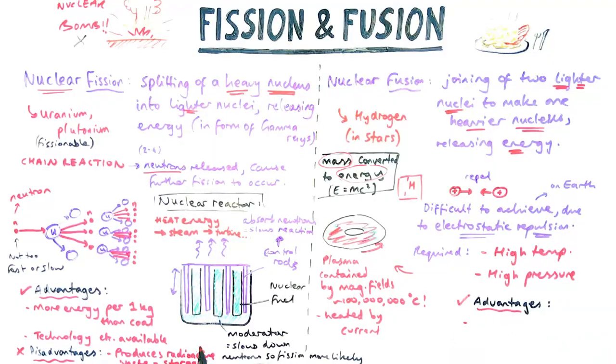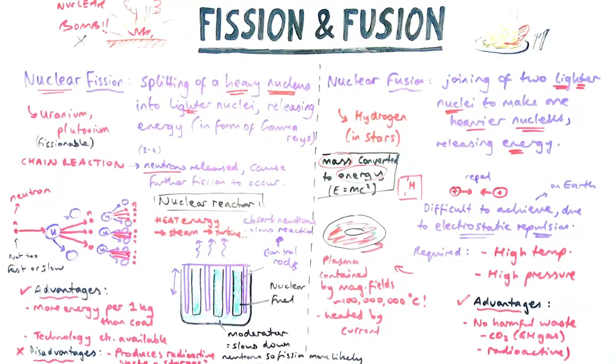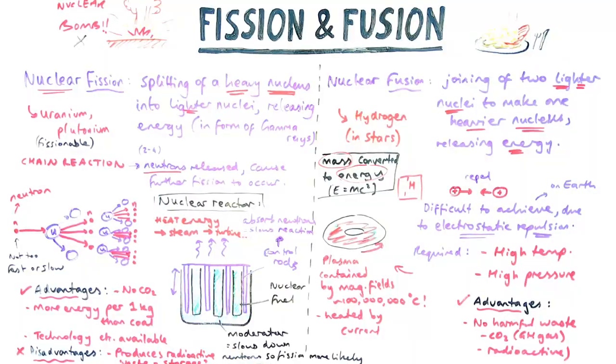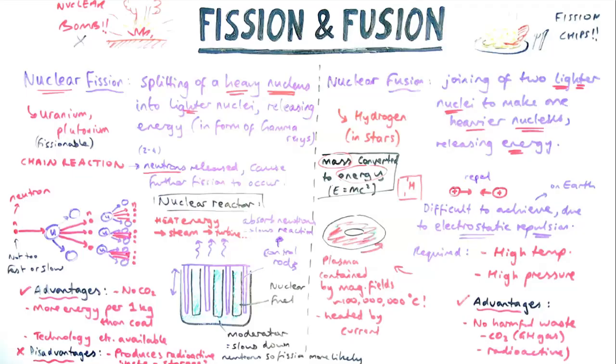So advantage of nuclear fusion, why are we bothering to try and achieve it, is that there's no harmful radioactive waste. There's also no carbon dioxide produced as well. There's just a bit of helium as the waste kind of product overall, which is pretty harmless. The main disadvantages are that we can't currently get it to work. So having a high temperature, high pressure is great, but it currently doesn't produce more energy out than in. What does a nuclear physicist have for dinner? It's fission chips, of course.